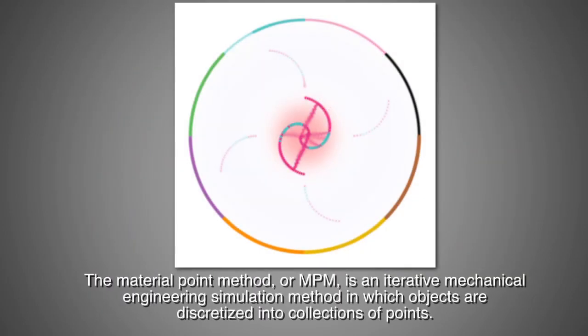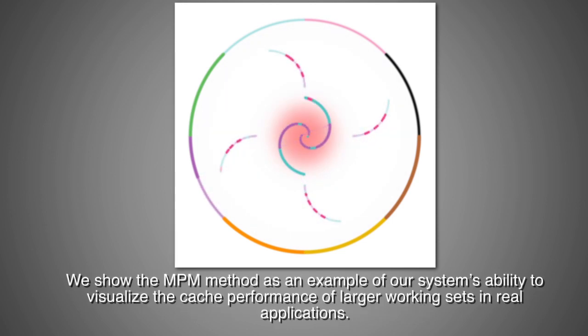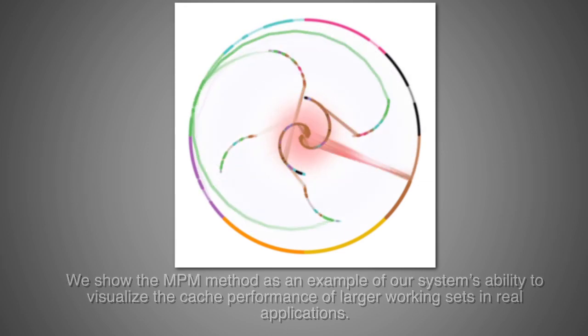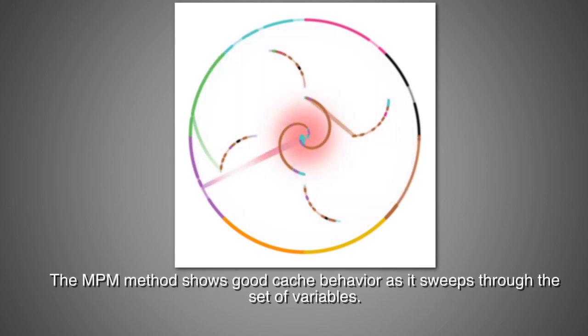The material point method, or MPM, is an iterative mechanical engineering simulation method in which objects are discretized into collections of points. We show the MPM method as an example of our system's ability to visualize the cache performance of larger working sets in real applications.